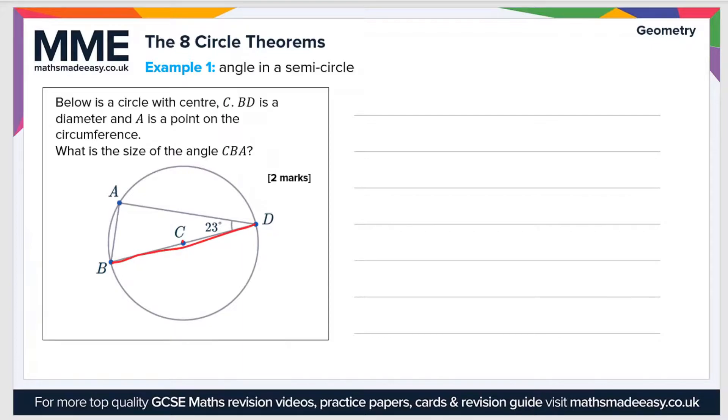And A here is a point on the circumference. What is the size of angle CBA? So angle CBA is this one here because it joins point C to B and B to A.